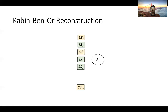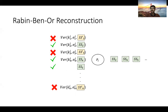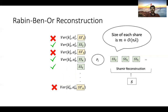Once a party Pi receives all broadcasted shares, it checks if the tag is valid. It follows from the security property of the tag scheme that if an adversarial party has modified the Shamir share, then tag verification fails with overwhelming probability. So the party collects the shares for which verification passes and does Shamir reconstruction to recover the original secret. The main drawback of this construction is that each share size is M + O(N * lambda), which is far from optimal.